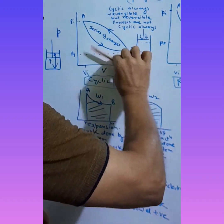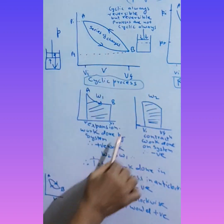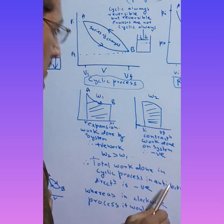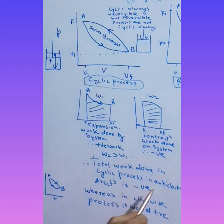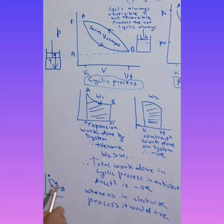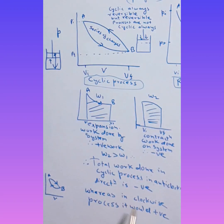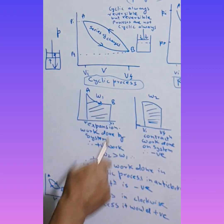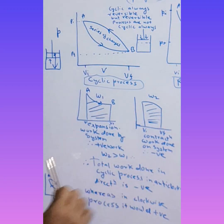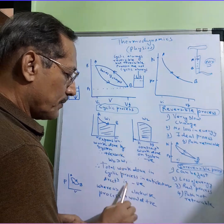W2 is greater than W1. Therefore, total work in the cyclic process — which was going anti-clockwise — is negative. If it had been clockwise direction, the trend would be reversed and the work would be positive. So we conclude: when moving in clockwise direction, work is positive; when moving anti-clockwise, work is negative.